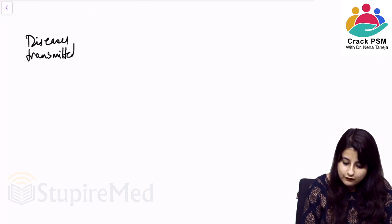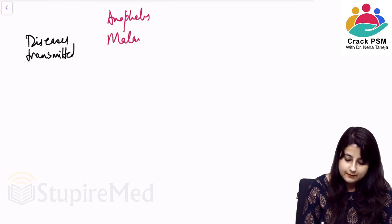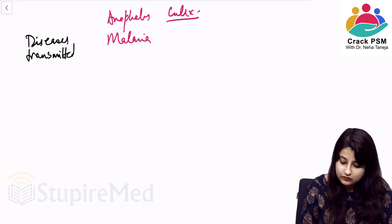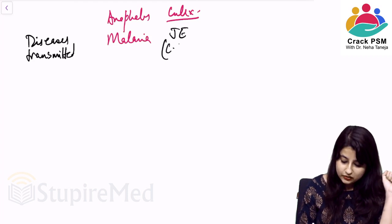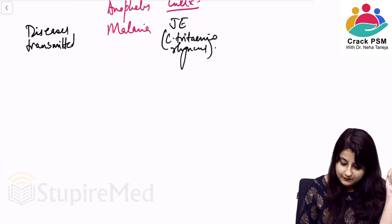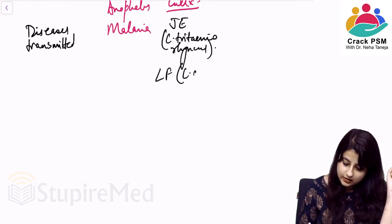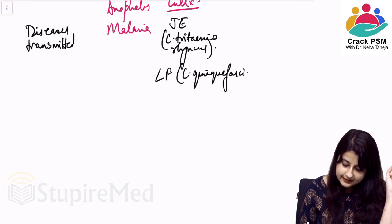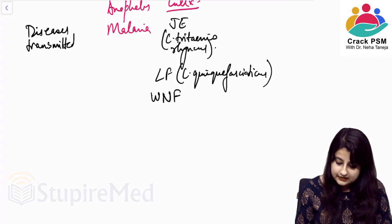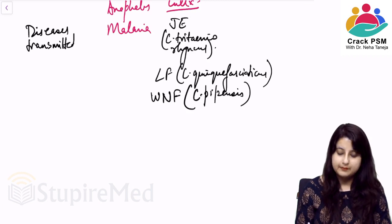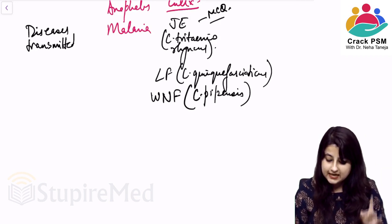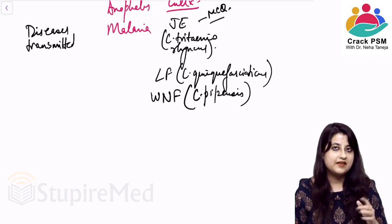The first one is Anopheles — it transmits malaria. Culex is very important: Culex transmits Japanese encephalitis, and the vector is specifically Culex tritaeniorhynchus. Culex also transmits lymphatic filariasis, with the vector being Culex quinquefasciatus, and it transmits West Nile fever as well. Please remember these as they are asked directly as MCQs.